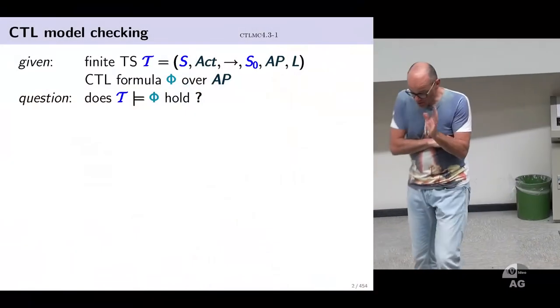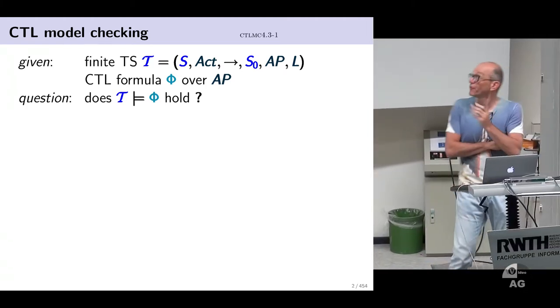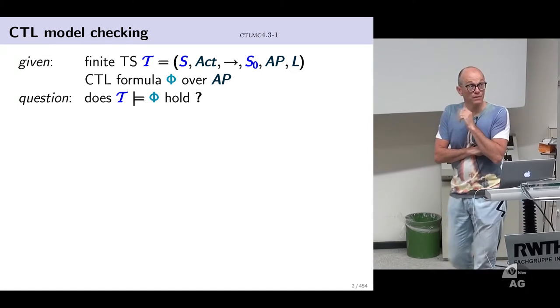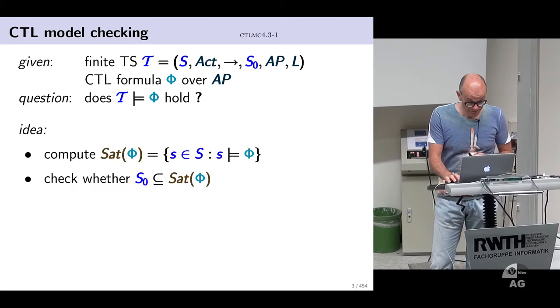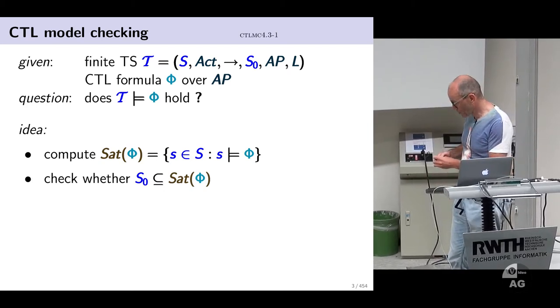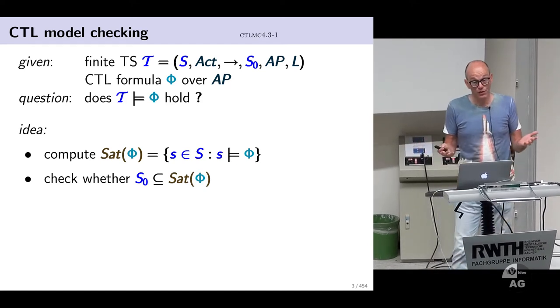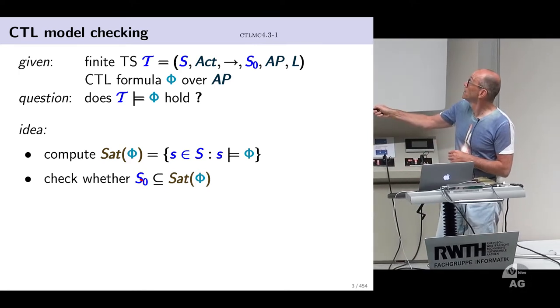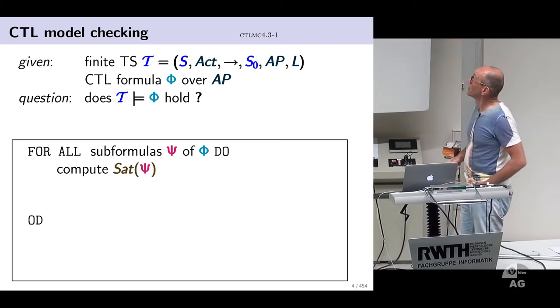Good morning. We have seen CTL, the idea that you reason about computation trees. We've seen this logic reasoning about trees and the difference with LTL. What is at stake today is the model checking problem: given a transition system and a CTL formula, the question is whether your transition system satisfies the formula or not. We're going to see a polynomial time algorithm today to do this checking.